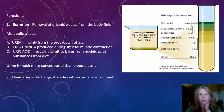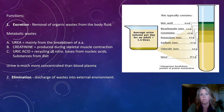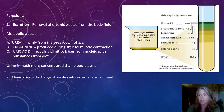Creatinine is another metabolic waste. Creatinine is a byproduct of a metabolic process that happens in the muscles. We have creatine phosphate, a molecule made inside our muscle fibers that combines with ADP to make fast ATP. What's left over is creatinine, which makes its way to the blood and needs to be filtered out in the kidneys.